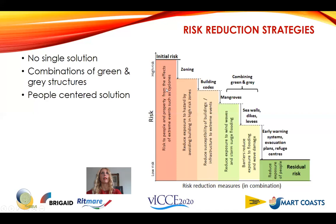A framework showing the way: starting from an initial risk to people and properties from extreme events, we can go for zoning — reducing exposure by avoiding building in high-risk zones — and use specific building codes to reduce risk. Then we should combine green and gray approaches, such as mangroves and sea walls, and further reduce risk by means of early warning systems and evacuation plans.